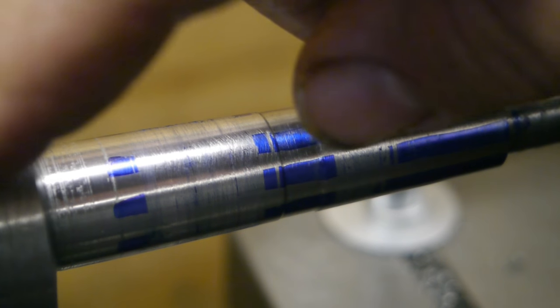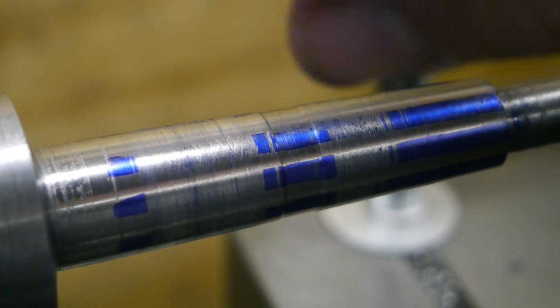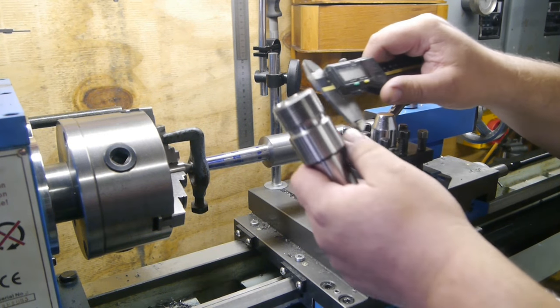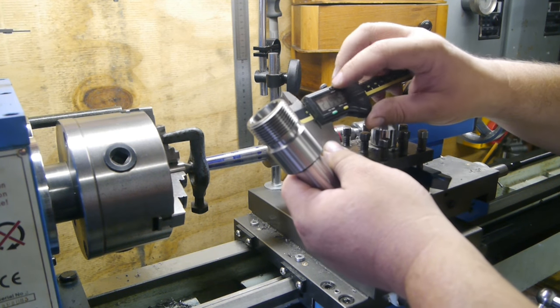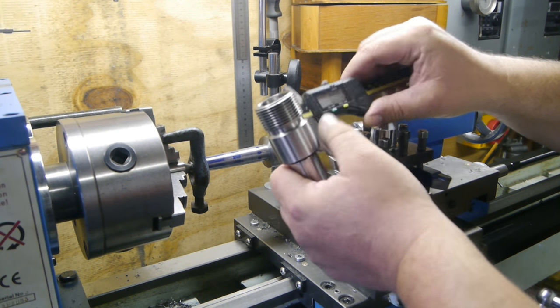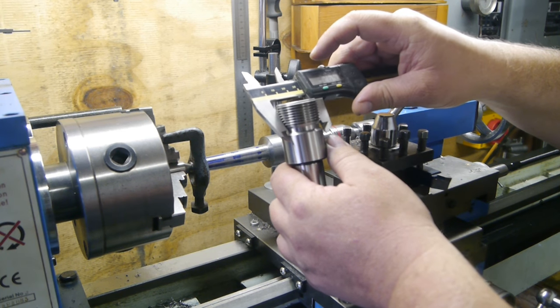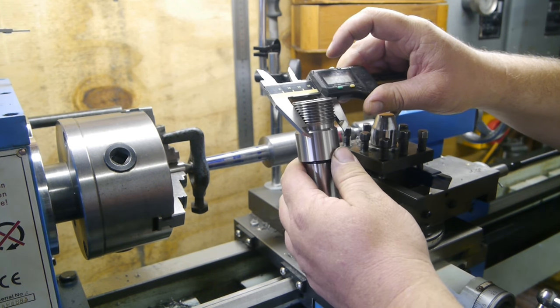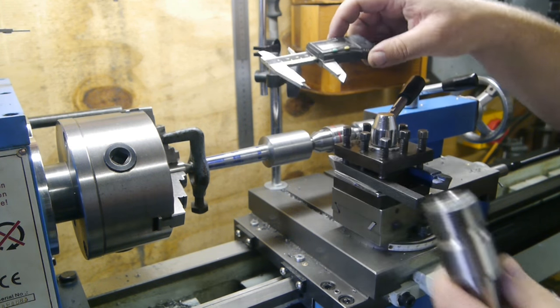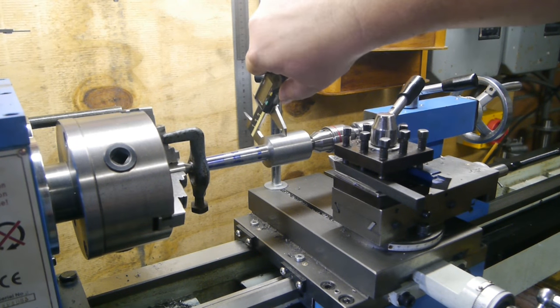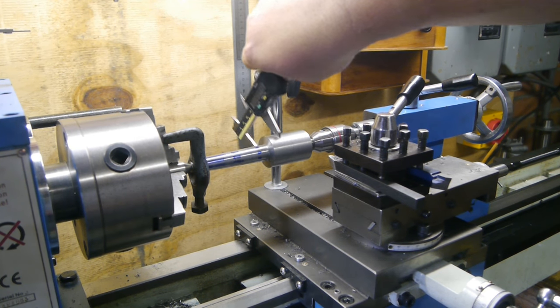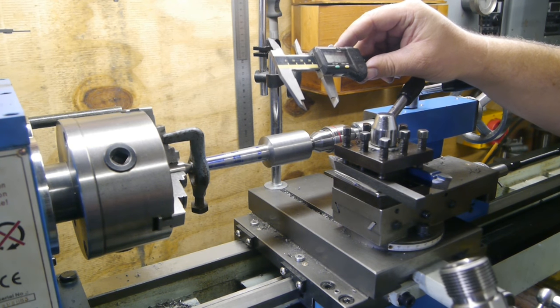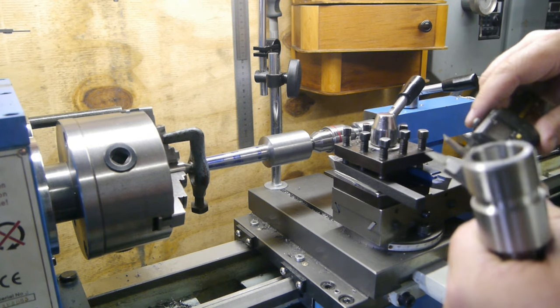Next I'm gonna turn it around and start working on the threading. Let's measure this thing. 32.65 millimeters. This is 34.9 so I'll have to take off a little over 2 millimeters.